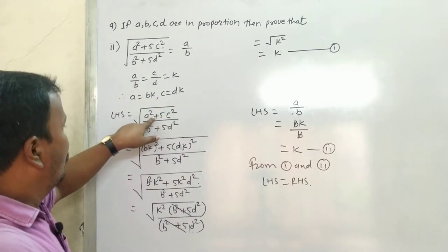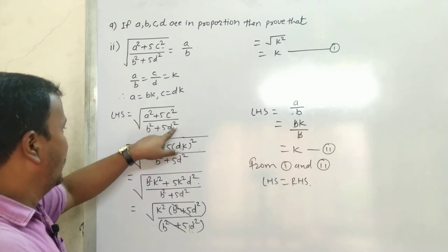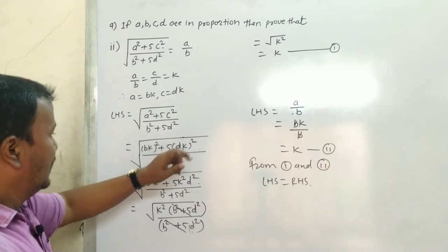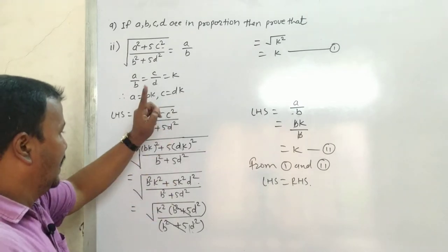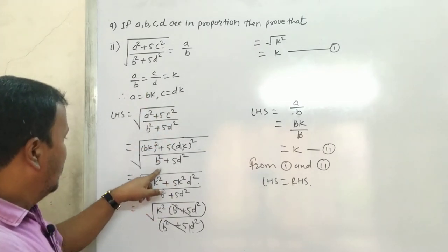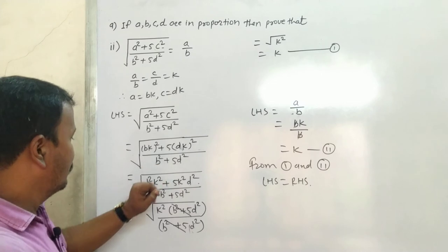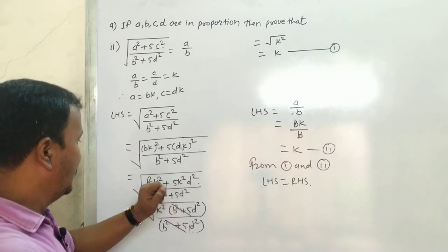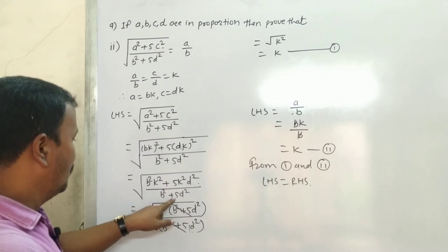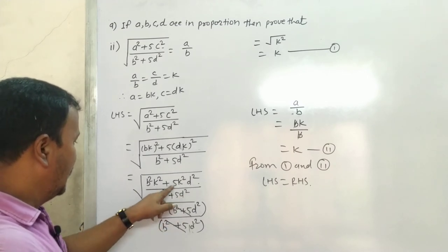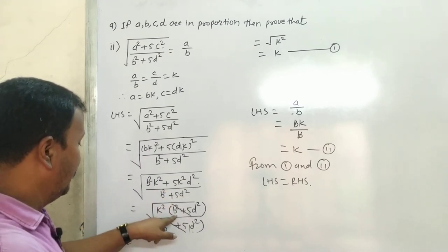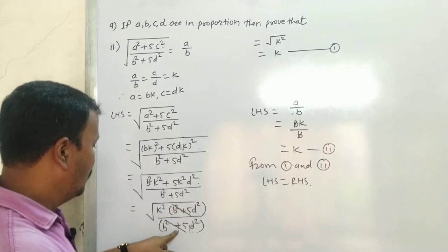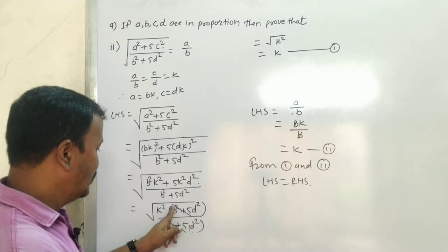Under root: (a² + 5c²) / (b² + 5d²). Substituting a = bk and c = dk: numerator becomes (bk)² + 5(dk)² = b²k² + 5d²k². Upon b² + 5d². Taking k² common from numerator: k²(b² + 5d²) / (b² + 5d²). Both terms are the same, so they cancel out.